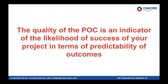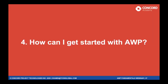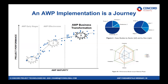The quality of the path of construction is an indicator of the likelihood of success of your project in terms of predictability of outcomes. How do you get started with advanced work packaging? AWP is a journey — this is not a tool you procure and buy and then say you're AWP-compliant.